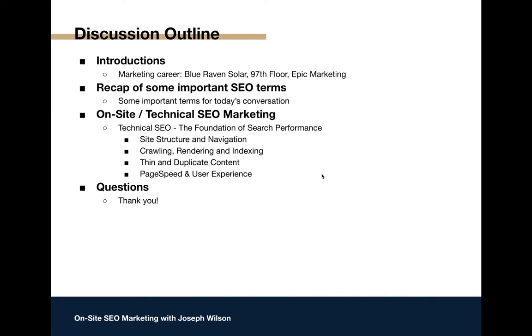Today's conversation is going to be mostly based on on-site SEO — what are things we're doing on our website that will increase our SEO opportunities? We'll do a little introduction, recap some important SEO terms, and then talk about on-site technical SEO marketing — specifically four categories: site structure and navigation, crawling and indexing, thin and duplicate content, and page speed and user experience.